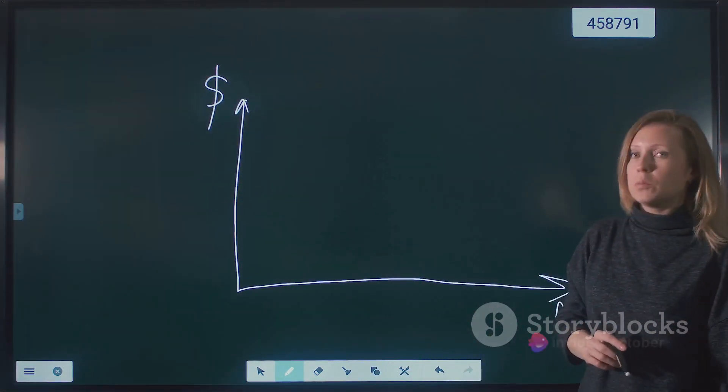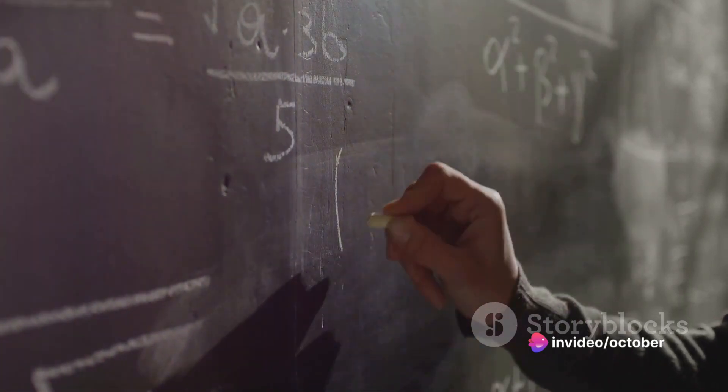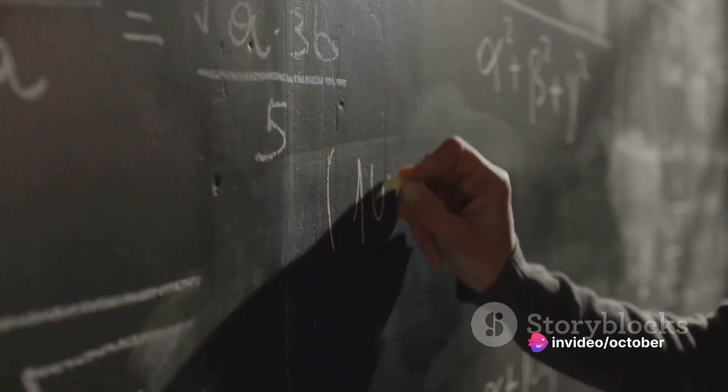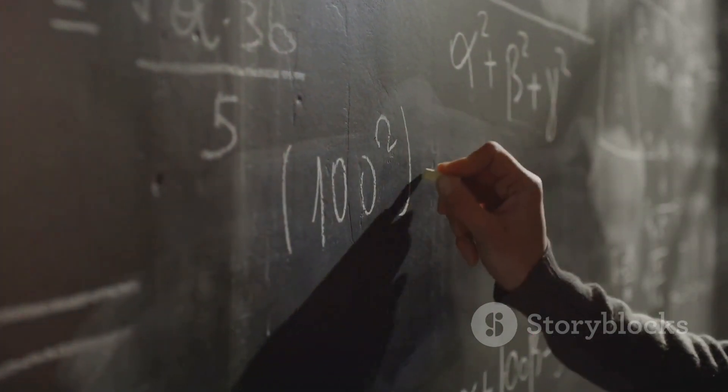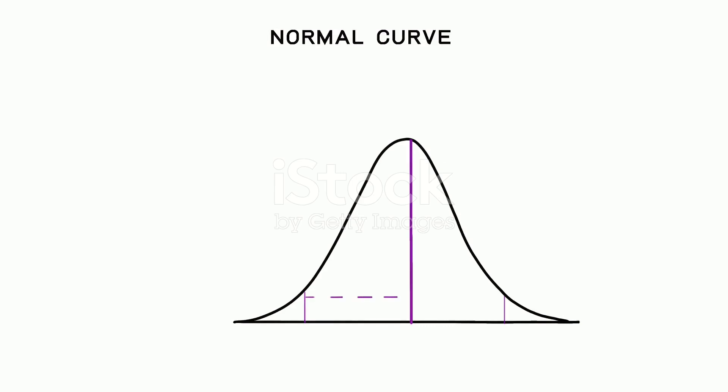But what does this theorem entail? Imagine a function continuous on a closed interval from point A to point B. The mean value theorem for integrals states that there's a point C within this interval where the value of the function equals the average value of the function across the entire interval.